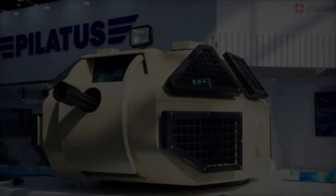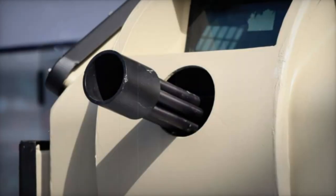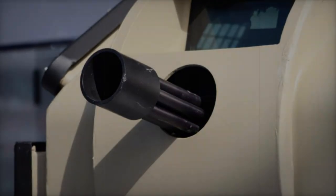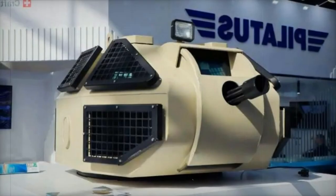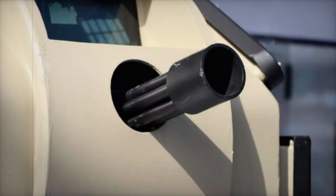The M134 Minigun can offer a variable firing rate ranging from 2,000 to 6,000 rounds per minute, with a muzzle velocity of 2,800 feet per second (853 meters per second), enabling it to achieve an effective range of 1,000 meters.